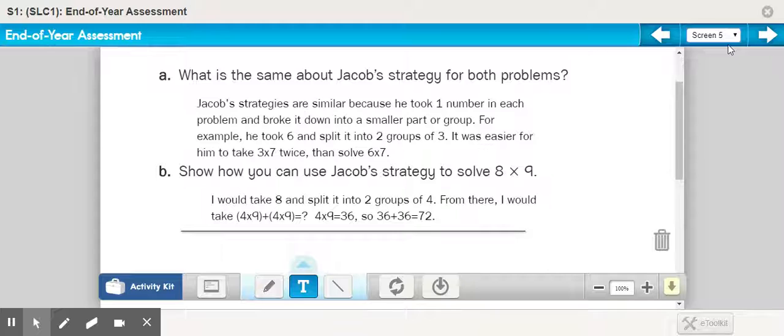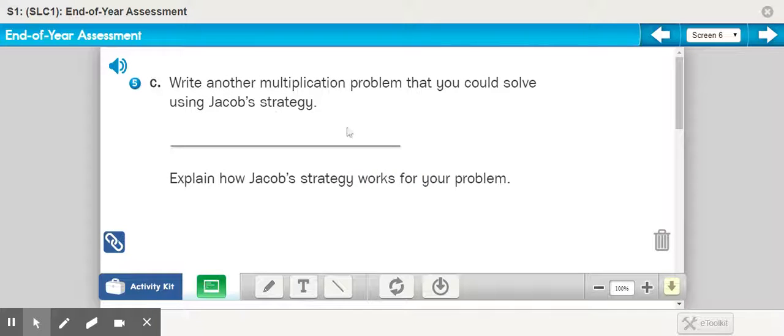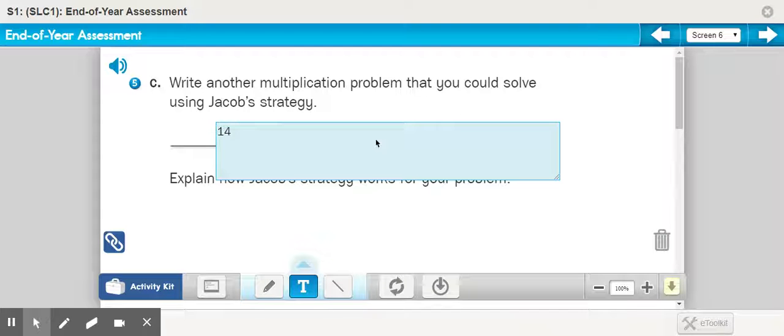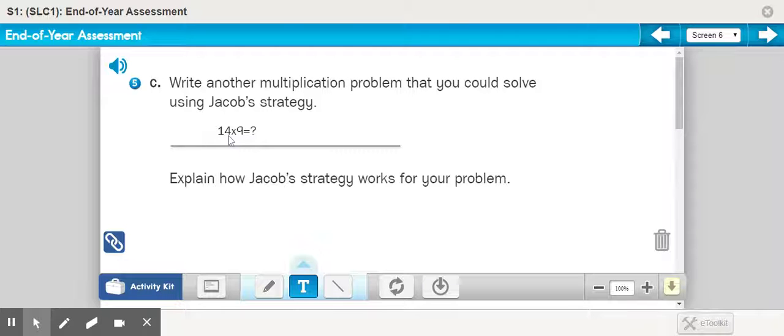Okay, moving to our next screen. So we have 5c and it says write another multiplication problem that you can solve using Jacob's strategy. So again, I would select a multiplication problem. Maybe you take 14 × 9 = ?. And from there, you decide to split 14 into two equal groups. So maybe 14 is split to 7 × 9. We could put parentheses around that.